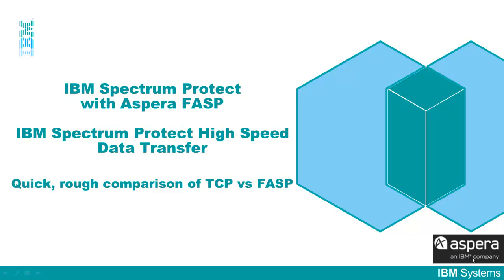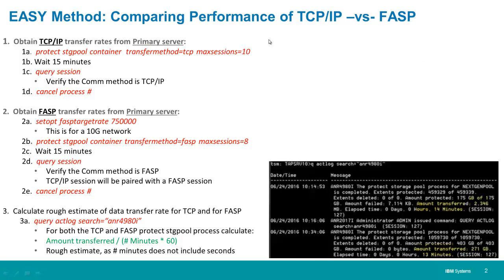In this video I'm going to show you a quick way to get a rough comparison of utilizing TCP versus FASP with your Protect Storage Pool command with IBM Spectrum Protect version 7.1.6 utilizing Aspera FASP. I'm assuming you've already set up your replication pairs inside of Spectrum Protect and you've already installed a FASP trial license. If you haven't, please watch one of my more detailed videos which will walk you through that process.